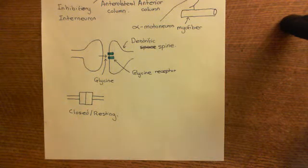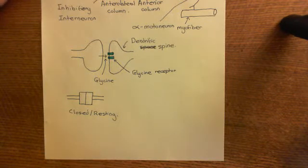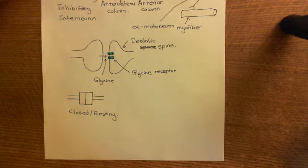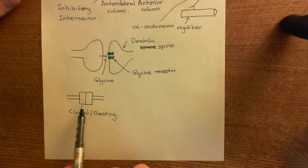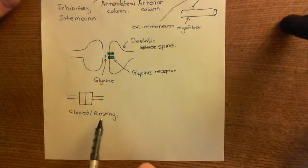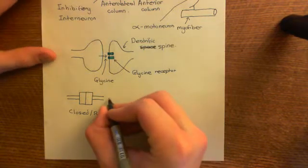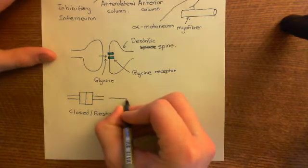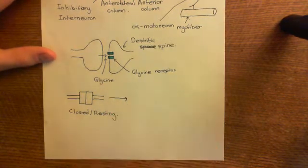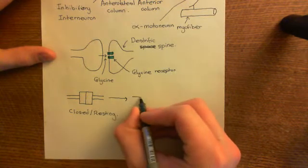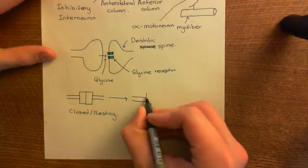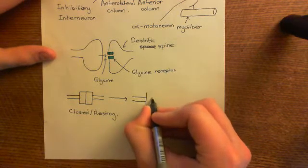Welcome back to this next video in which we are discussing the glycine receptors. We're in the process of discussing the opening of the glycine receptors. We've got our glycine receptor here in the closed/resting state. Then when glycine binds to the extracellular domain of this glycine receptor, it's going to cause a conformational change that will take this glycine receptor into the open state.